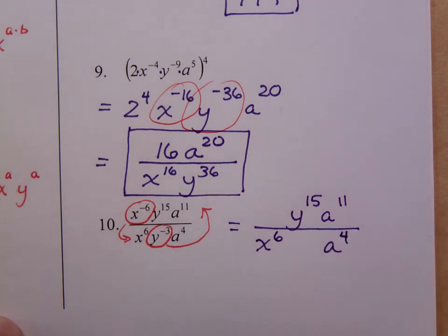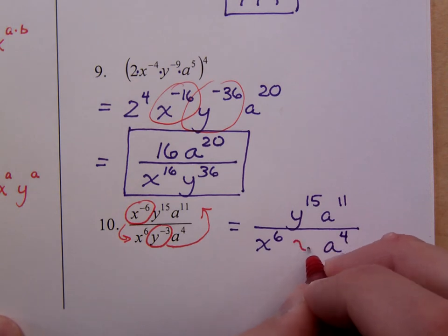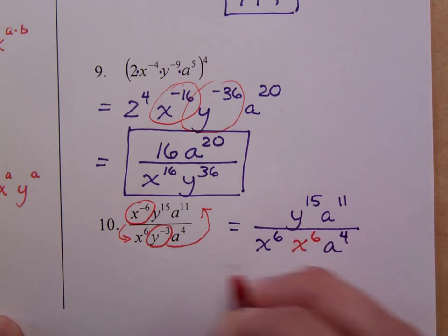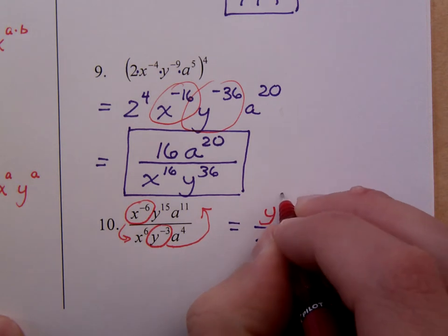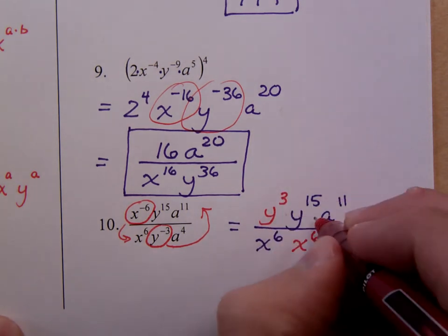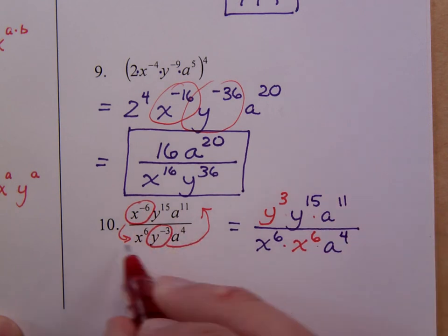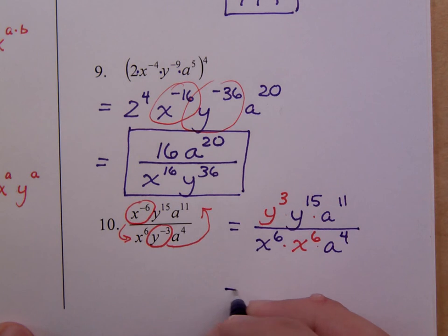What moved was this guy. He moves into the denominator and becomes x to the 6th. y to the negative 3rd moves into the numerator to become y to the positive 3rd. Everything here is still connected through multiplication just like it was in the original problem. But the reason I do it this way is because it's very easy for me to see how everything simplifies.